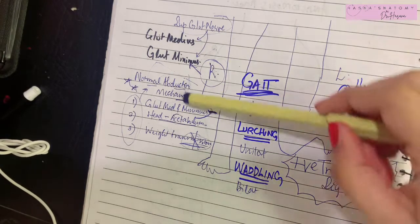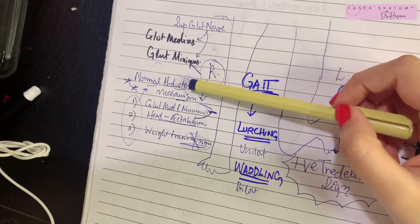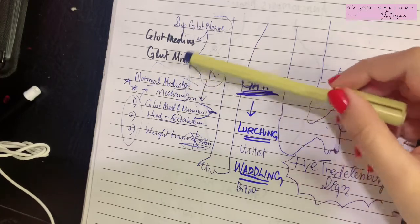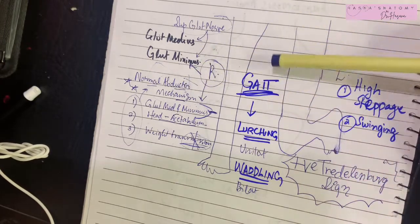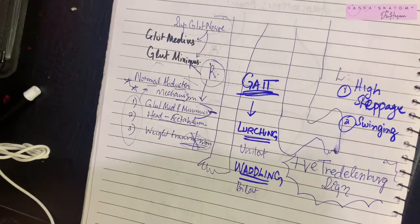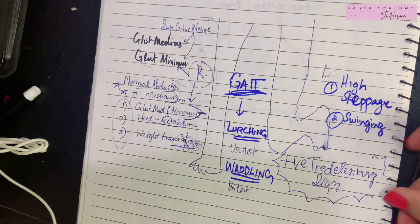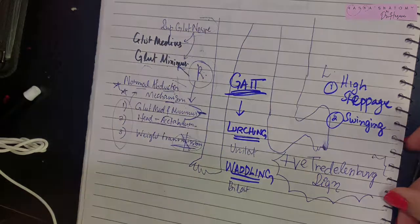This was a very important concept related to the normal abductor mechanism and the gluteus medius and minimus, and how they play a role in contributing to a person's gait. I really hope you understood today's lecture. Do not forget to subscribe. Thank you so much for watching.